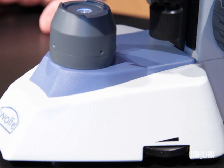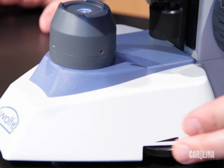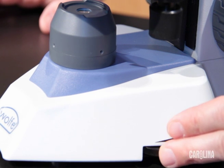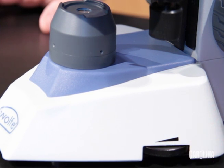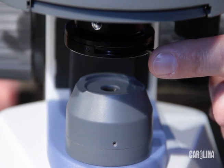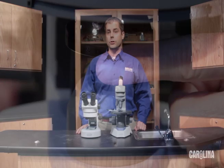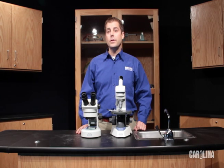First dial the dimmer to its lowest setting. You'll use low light levels when starting out because the lower objectives are bright and less light is needed. Then adjust the disc or iris diaphragm to regulate the amount of light coming through the stage. Start with a less open aperture with low power objectives.